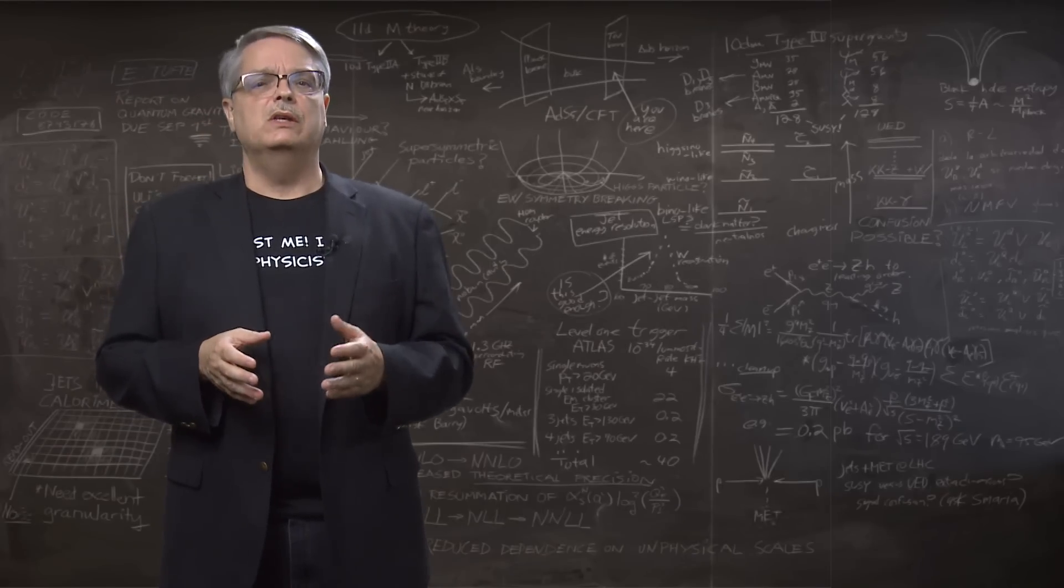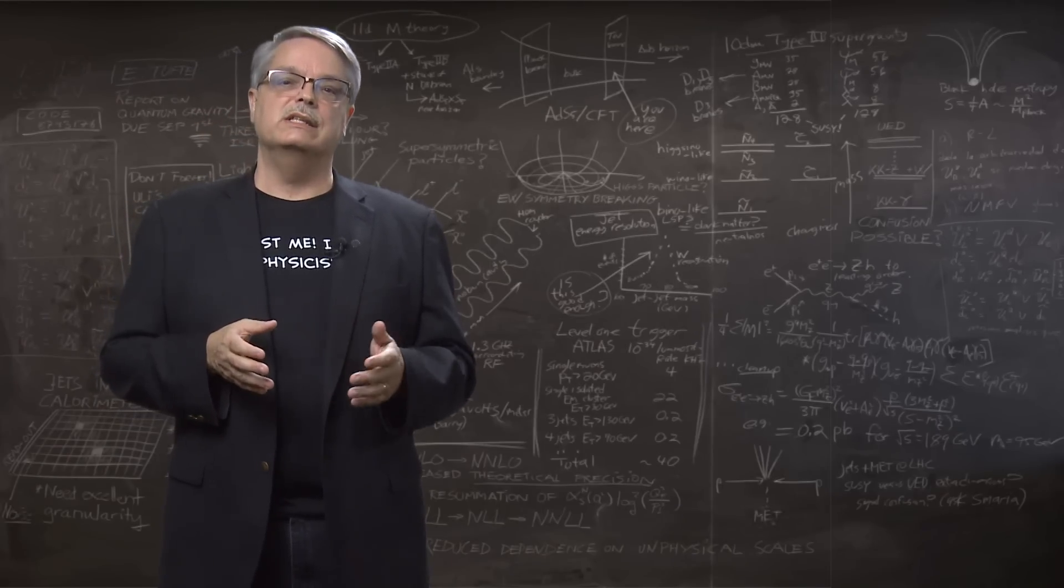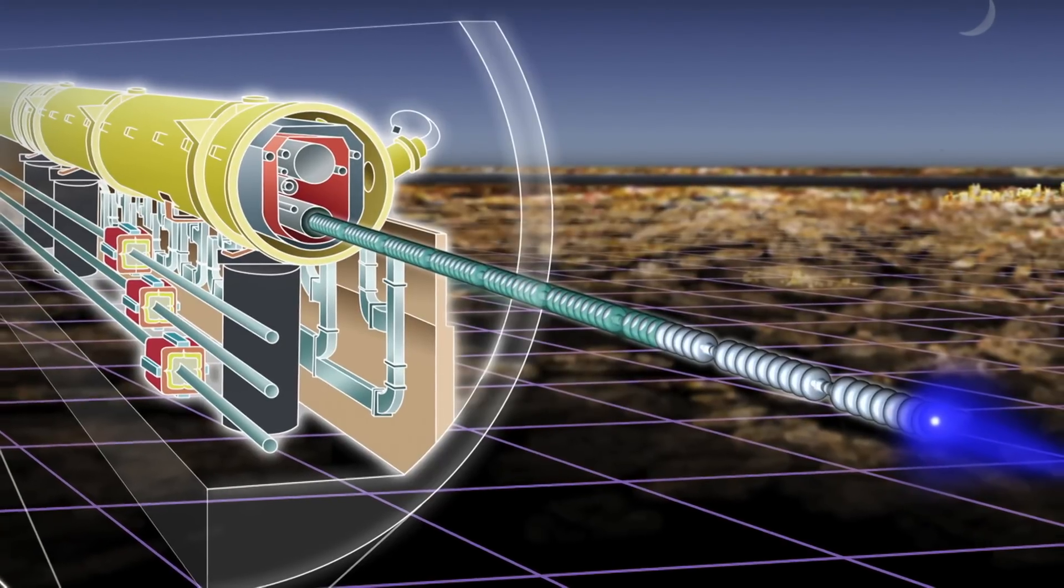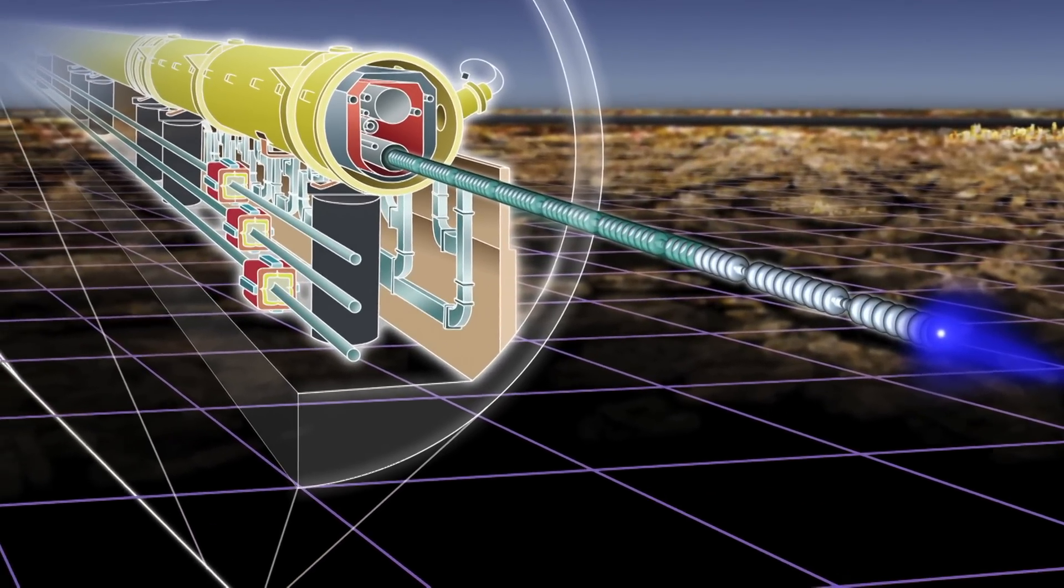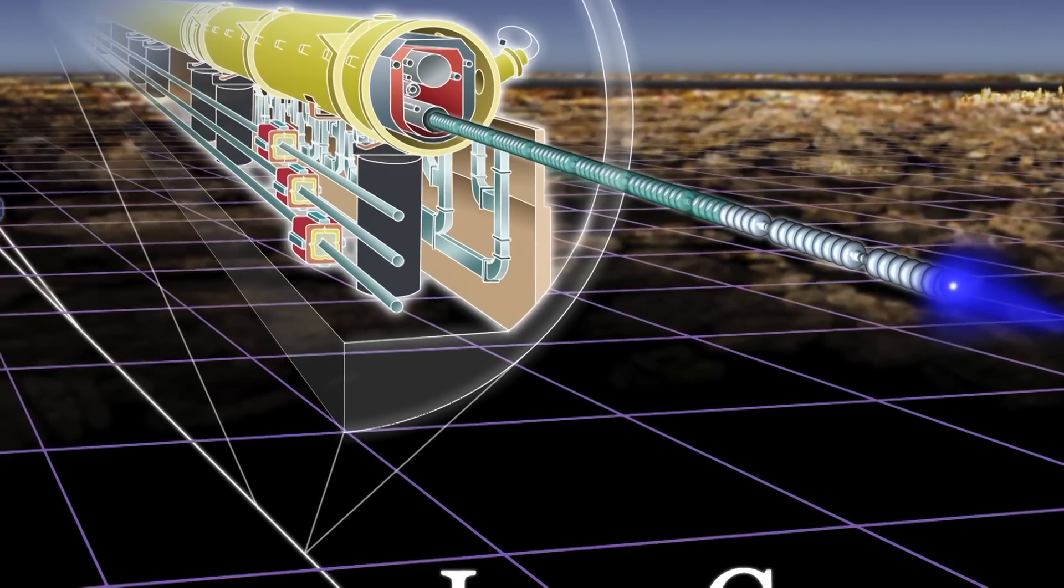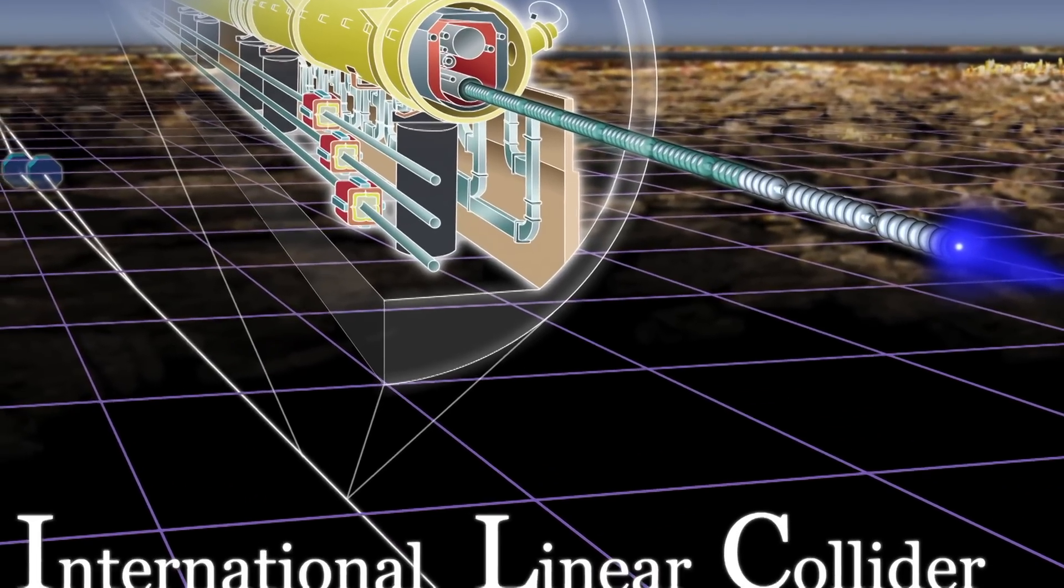This radiation the electrons emit when moving in a circle is why scientists are thinking about a linear accelerator for the next big electron collider. This is called the International Linear Collider, or ILC, and it's in the design stages. There is no guarantee that it will ever be built.